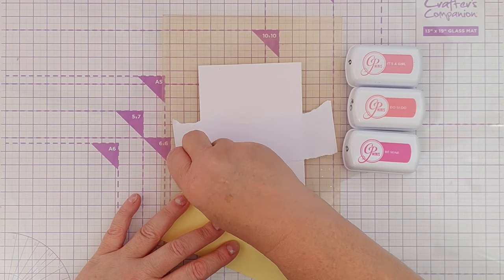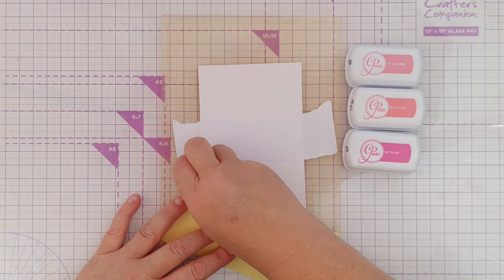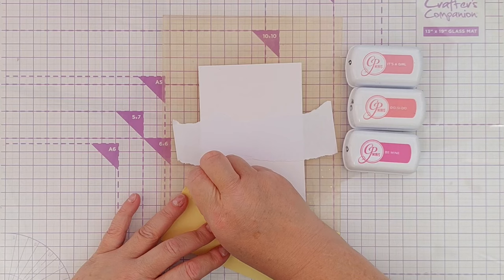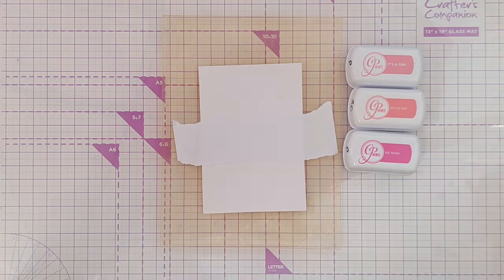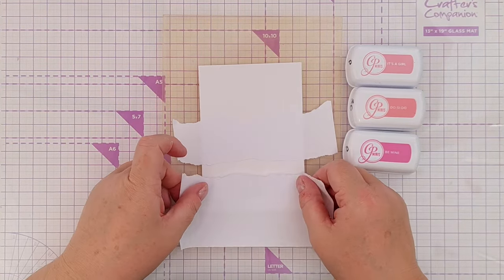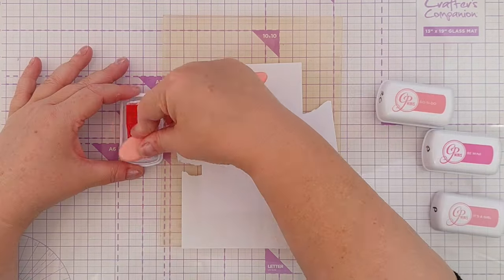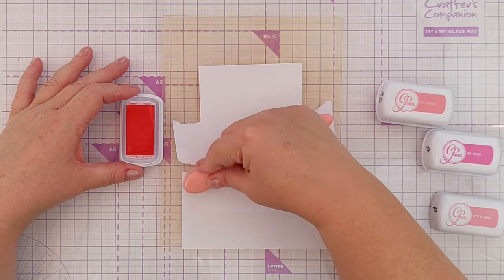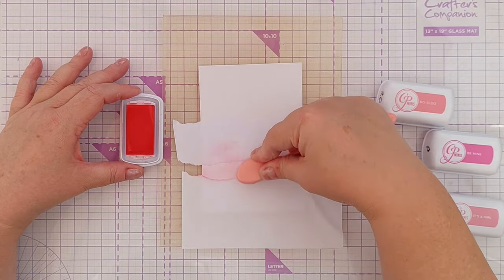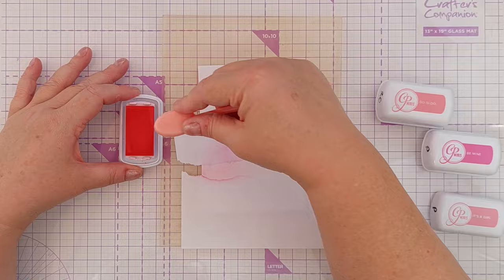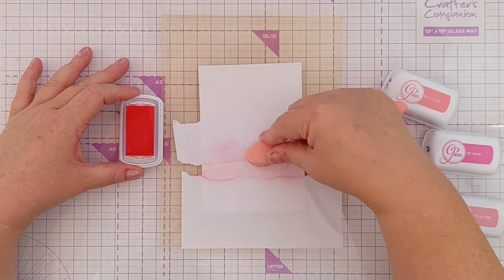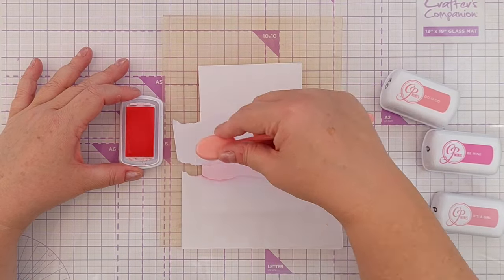So I tore some of this masking paper to create some torn edges and I stuck these on my panel to create a strip with torn edges either side that I could then blend some inks onto. And then I blended on some Katherine Pooler 'It's a Girl' ink, which is a very pale pink.